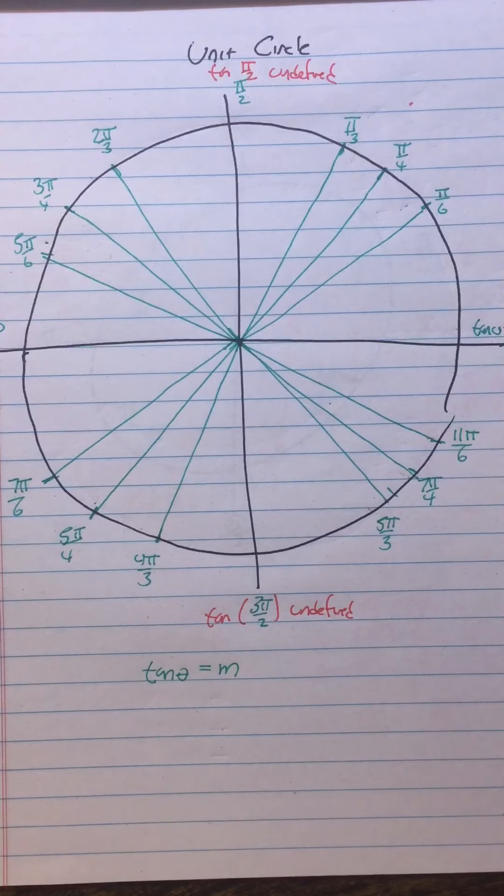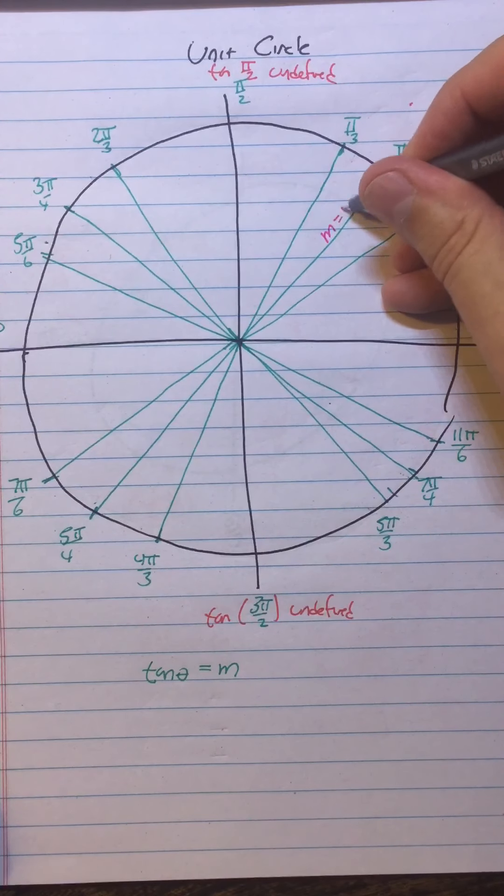Now here's how you're going to get the rest. Well, here's the next one. I guess there's another one that's easy to get. So all the 45-degree angle ones, the slope is 1. So the tangent of π/4 is 1.